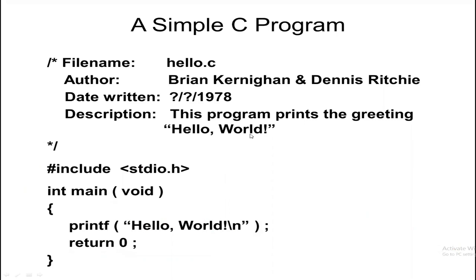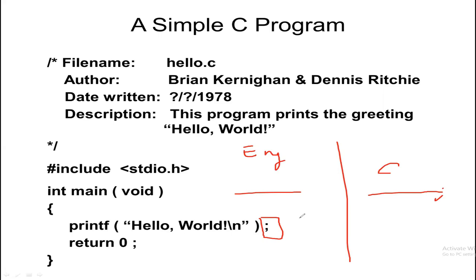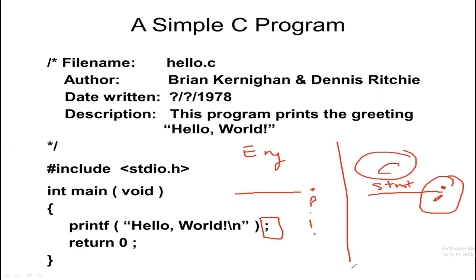After the printf call, we put a semicolon. In C, each statement ends with a semicolon. In English, a statement ends with a dot or question mark or exclamation mark — but in C, you must put a semicolon at the end of each statement.